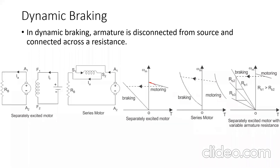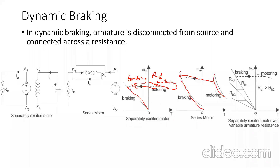This is the speed-torque characteristic in the first quadrant for a separately excited DC motor working in forward motoring. When dynamic braking is applied, the characteristic shifts from the motoring to the braking region. As energy dissipates in the external resistance the speed falls and the machine comes to rest. Similarly, for the series motor, the characteristic shifts from motoring to braking region and speed decreases.